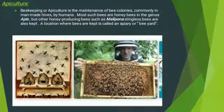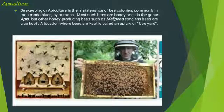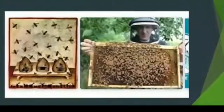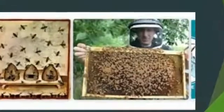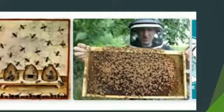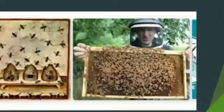The second basic topic in economic zoology is apiculture. Apiculture, or beekeeping, is defined as the maintenance of bee colonies, commonly in man-made hives by humans. Most such bees are honey bees in the genus Apis, but other honey-producing bees such as Melipona stingless bees are also kept. A location where bees are kept is called an apiary or bee yard.